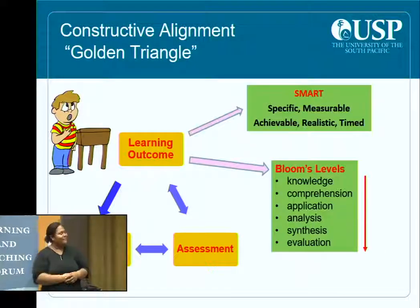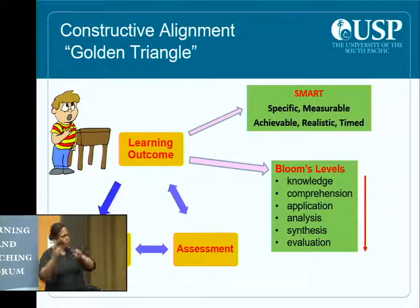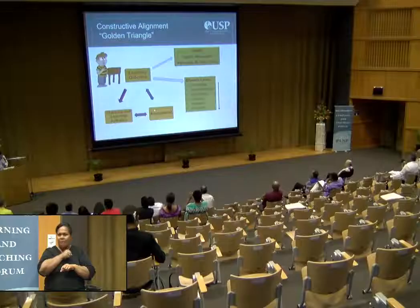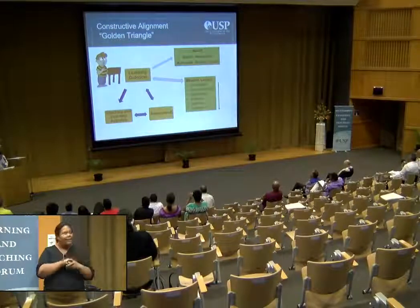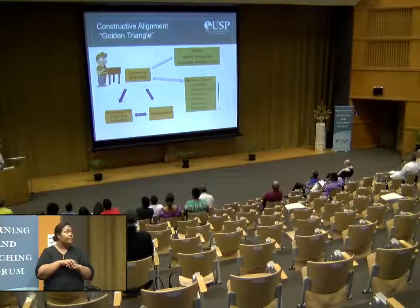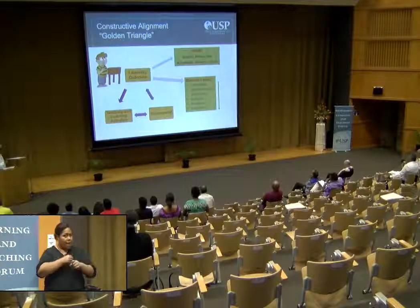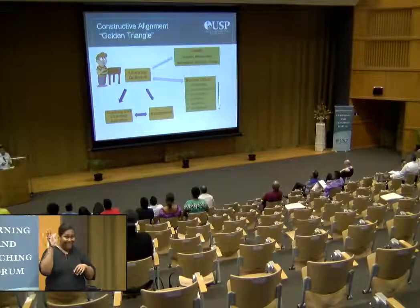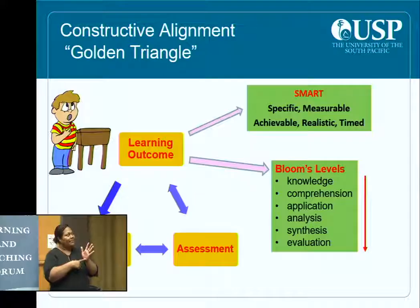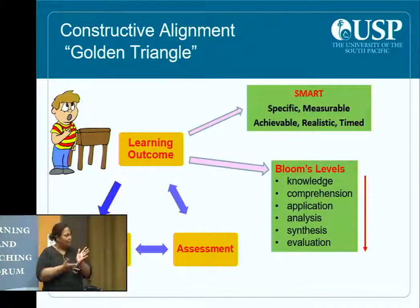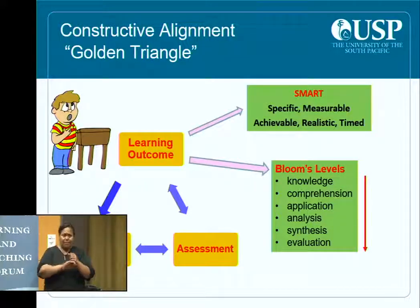Before I come to assessment and feedback, I draw your attention to the 'golden triangle' in the literature: learning outcomes must be consistent with assessments, and both must come from teaching and learning activities. Our learning outcomes have to be SMART — measurable — and must build on Bloom's taxonomy. The level of complexity and skills required to solve problems increases as you move from the lower to the higher levels of the taxonomy.